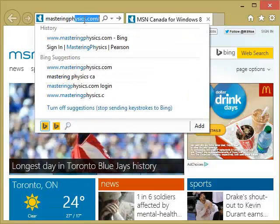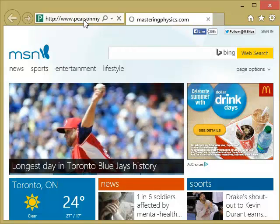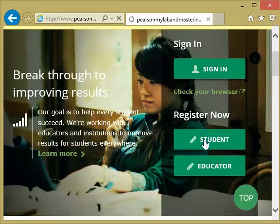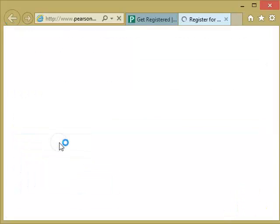So start by opening up your favorite browser and typing www.masteringphysics.com. So you'll see the screen. Click on Student. Next, you click on in US or Canada, since we're in Canada.